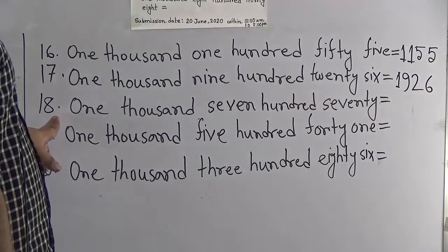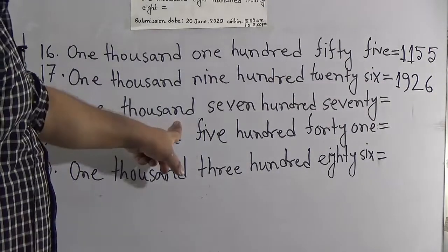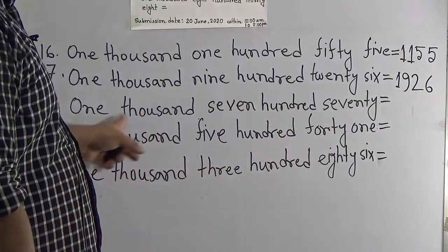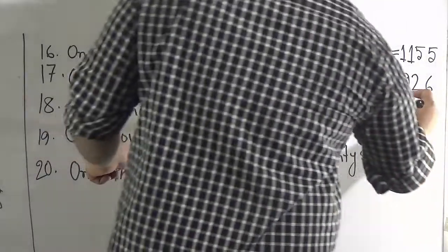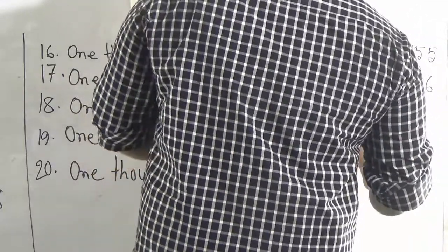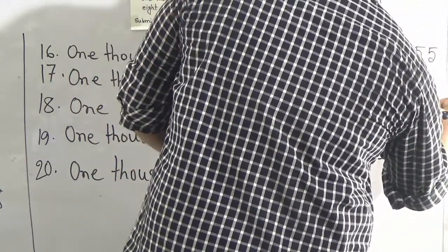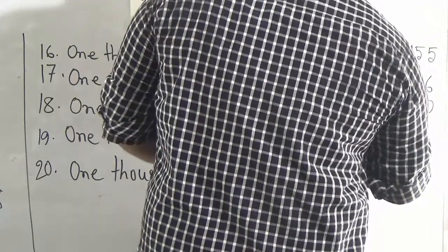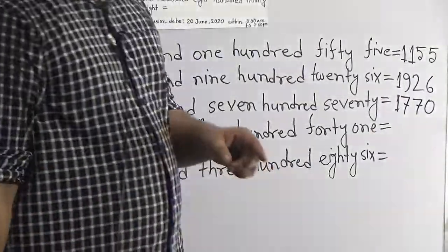Our next number is 1,770. Write 1,000 means 1, 700 means 7, and 70 means 7 and 0. So it is called 1,770.